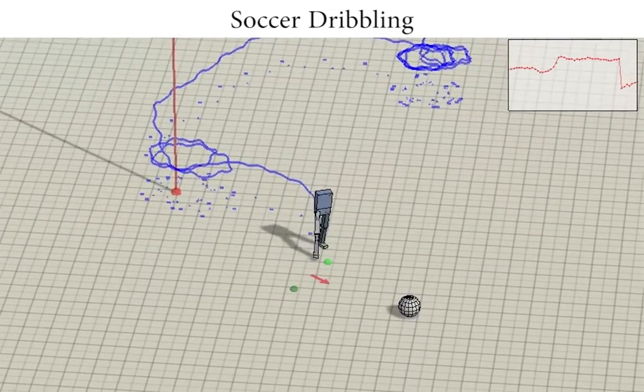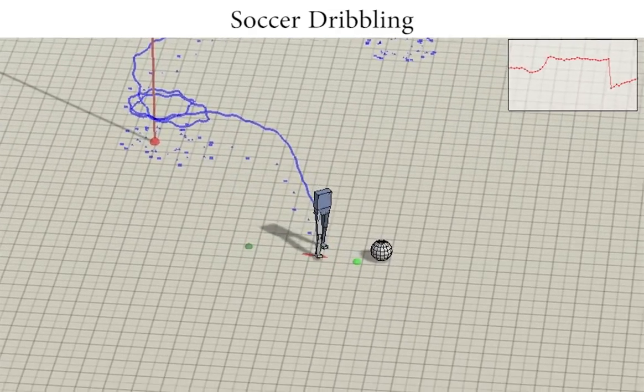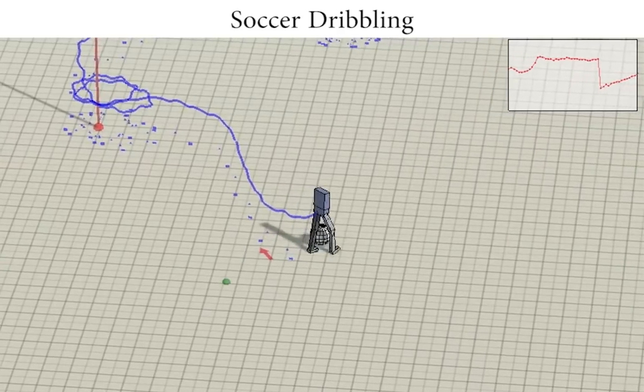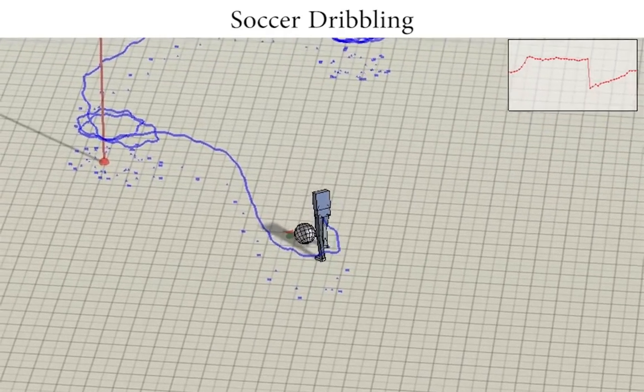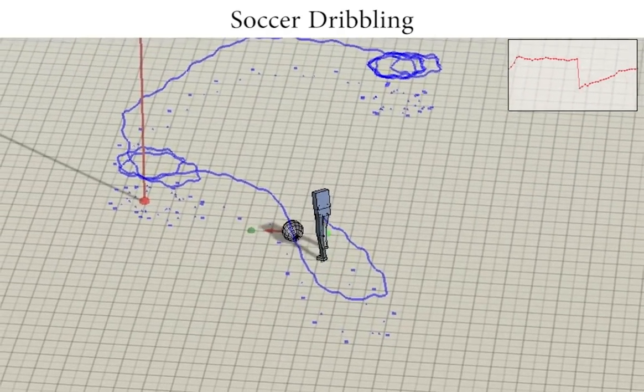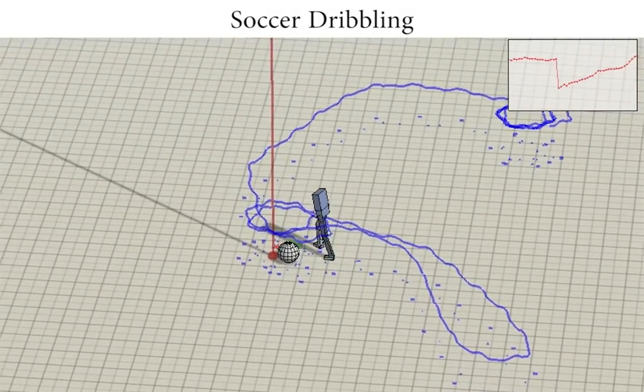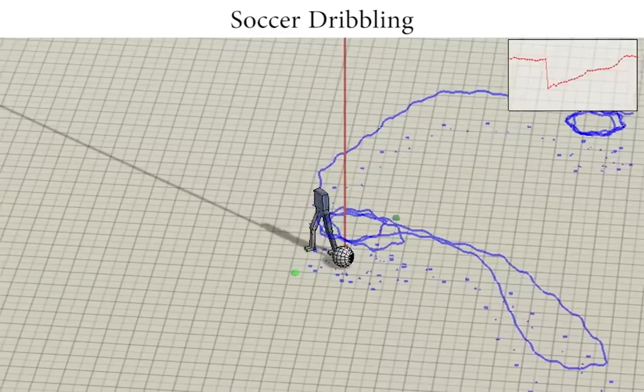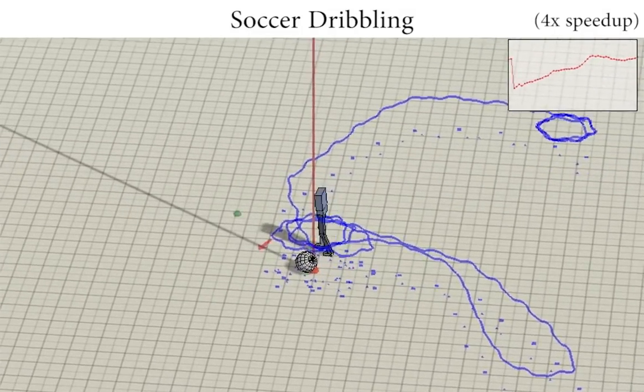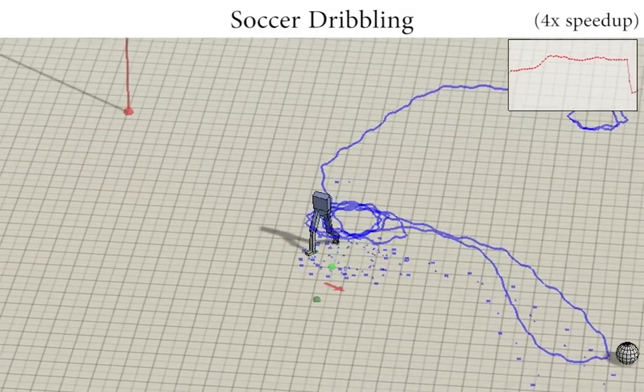In this soccer dribbling task, the high-level controller has learned to perform a sequence of subtasks in the correct order. It learns to first take possession of the ball, then to dribble the ball towards the target. Once the ball has reached the target, it learns to circle the ball while maintaining some distance to avoid perturbing the ball away from the target.